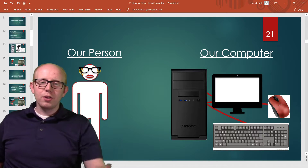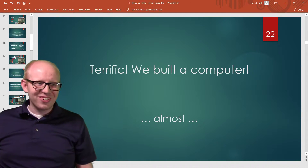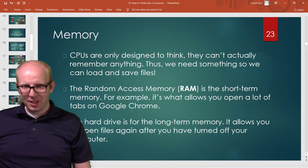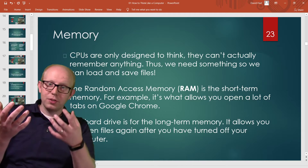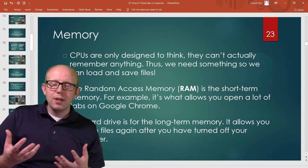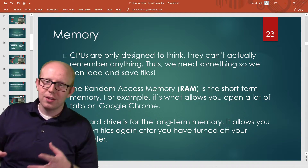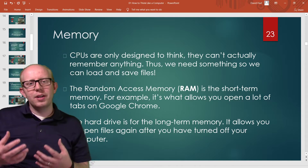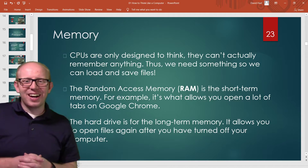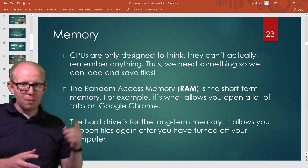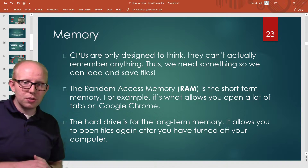We built a computer, but not quite — we have one more step: memory. The brain on a human handles both calculations and remembering things. On a computer the CPU can't do that, so it has to have a separate part for memory — we have to split the brain into two parts. The memory is not handled by the CPU. We need something to load and save files and information, and there are two ways to do that.